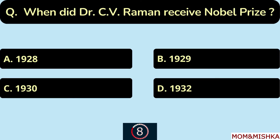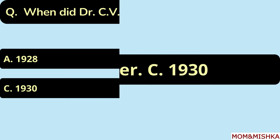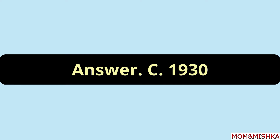When did Dr. C. V. Raman receive the Nobel Prize? In the year 1930, Option C.